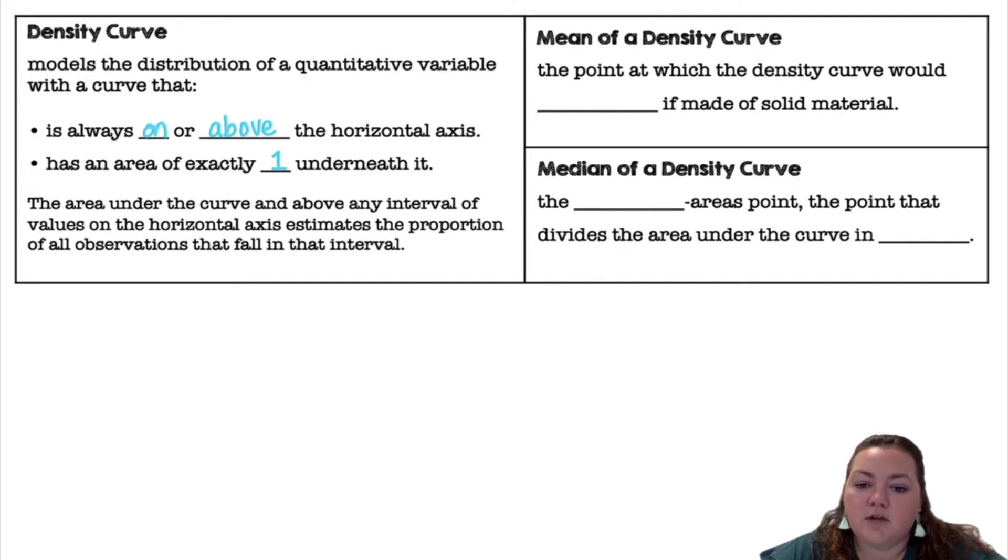The mean of a density curve is the point at which the density curve would balance if it was made out of a solid material. The median of the density curve is the equal area point, the point that divides the area under the curve in half.